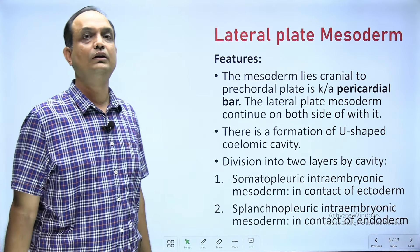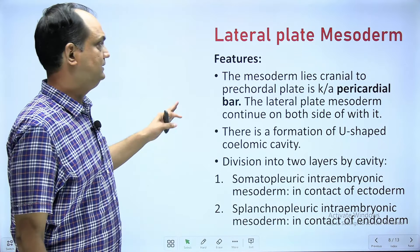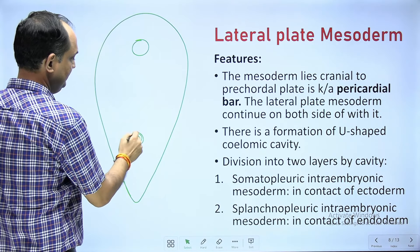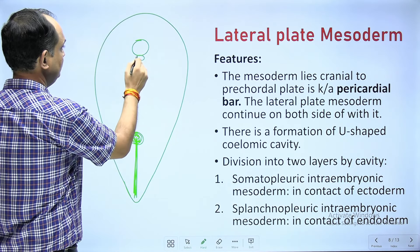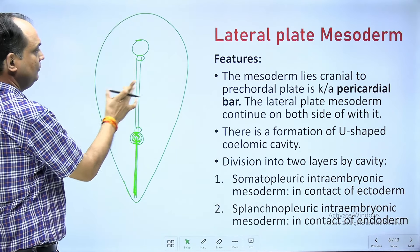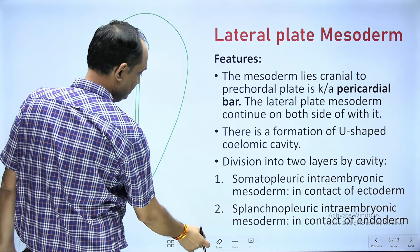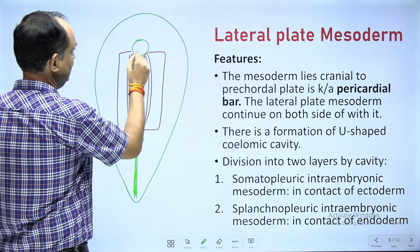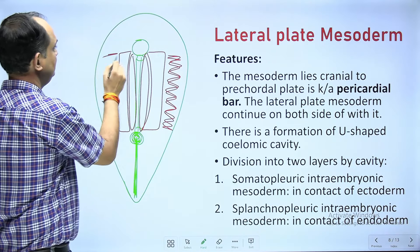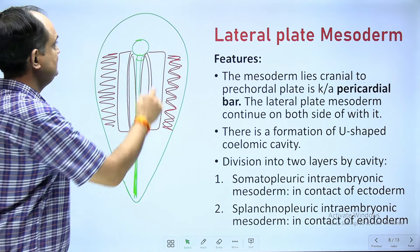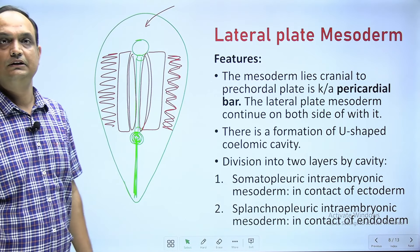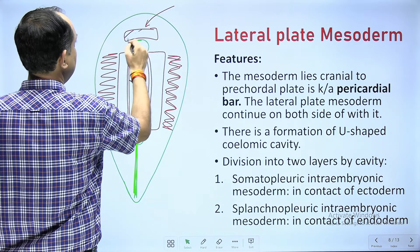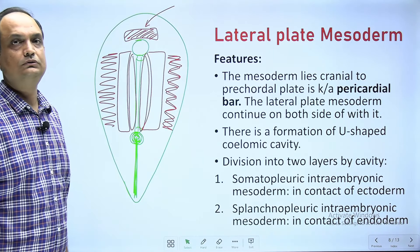The important features of the lateral plate mesoderm: in the embryonic disc, anteriorly you have the pre-chordal plate, posteriorly the primitive streak, and in the middle is the notochord. On the sides, there are three sets of mesoderm — para axial, intermediate, and lateral plate. Additionally, there is mesoderm cranial to the pre-chordal plate; this area is known as the pericardial bar, which is also a mesodermal area.